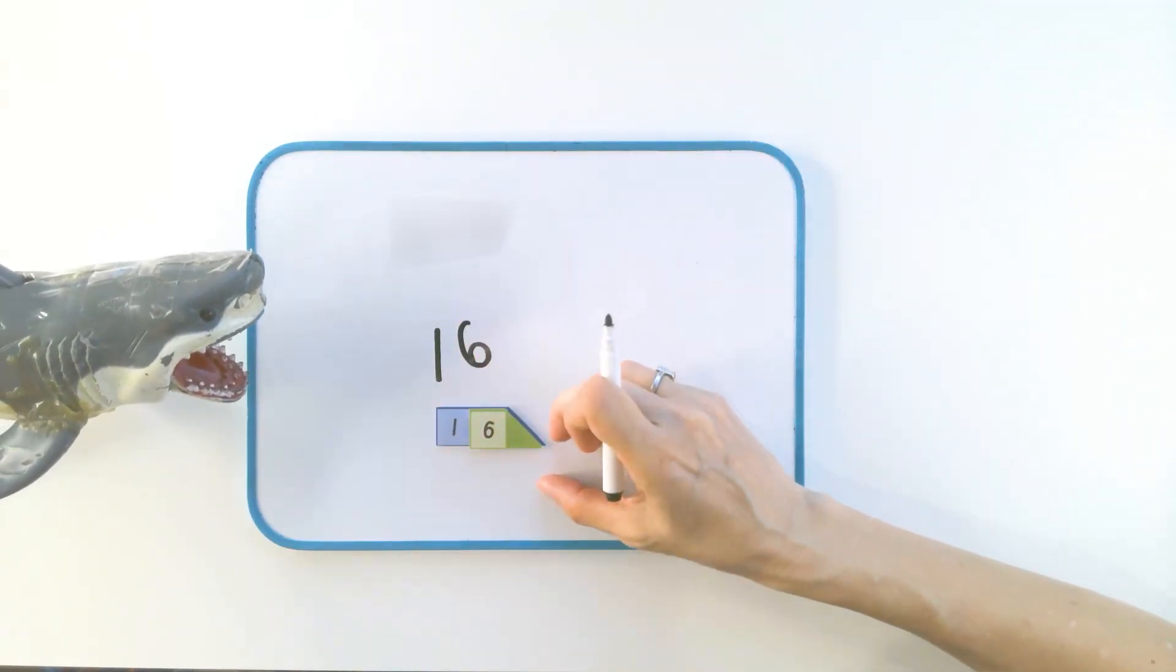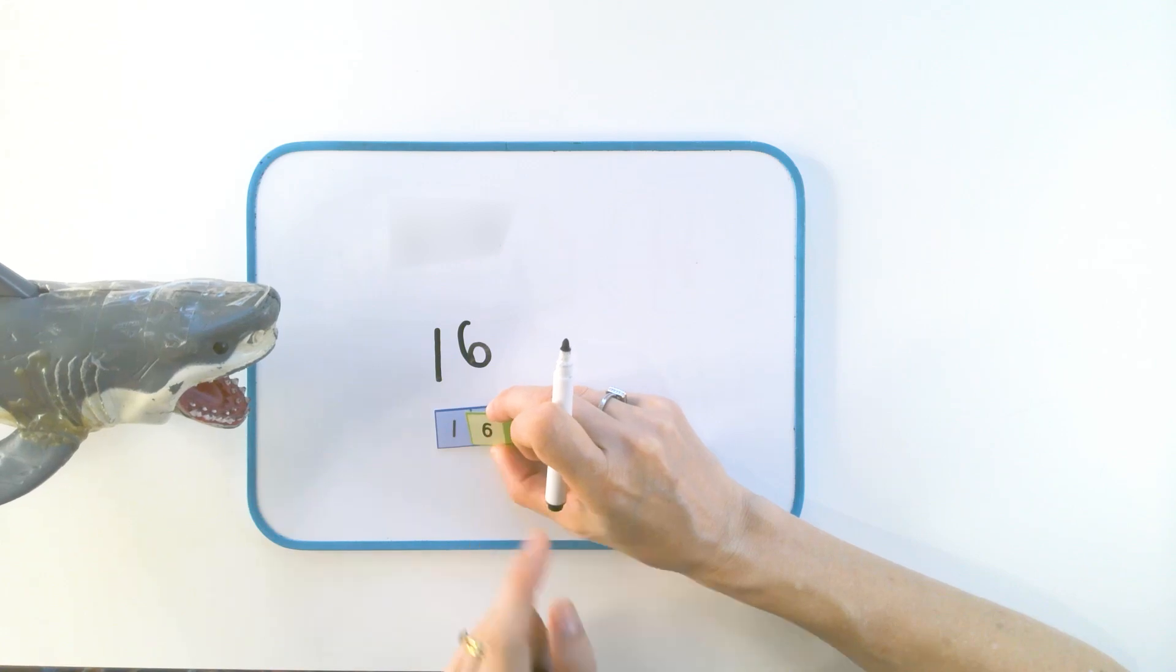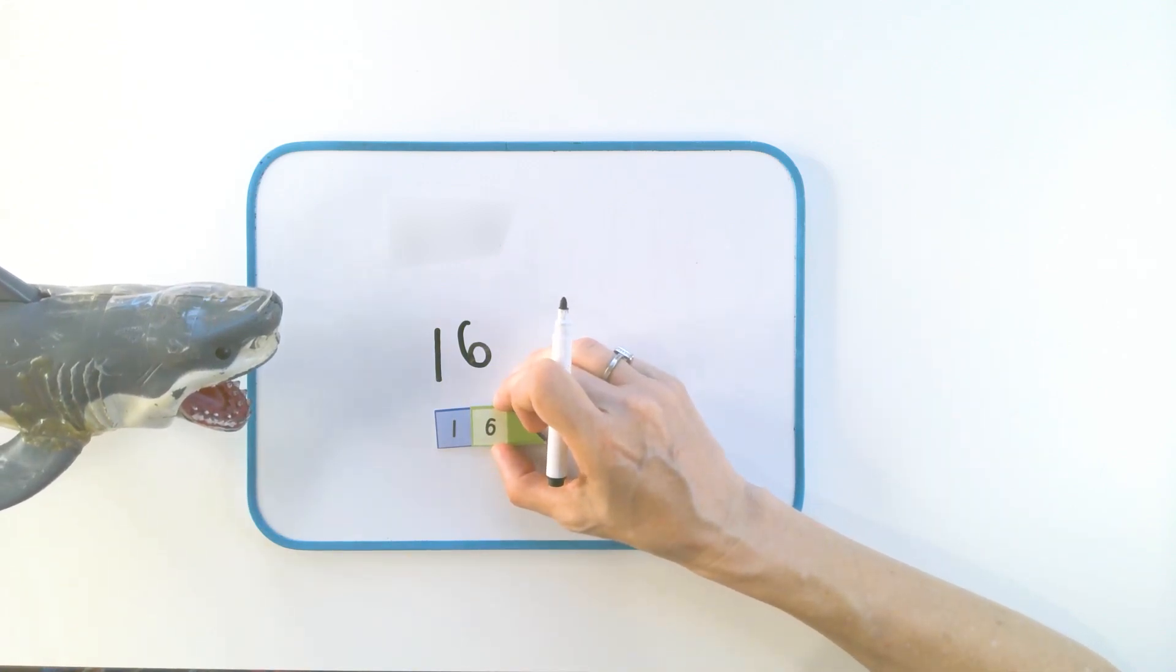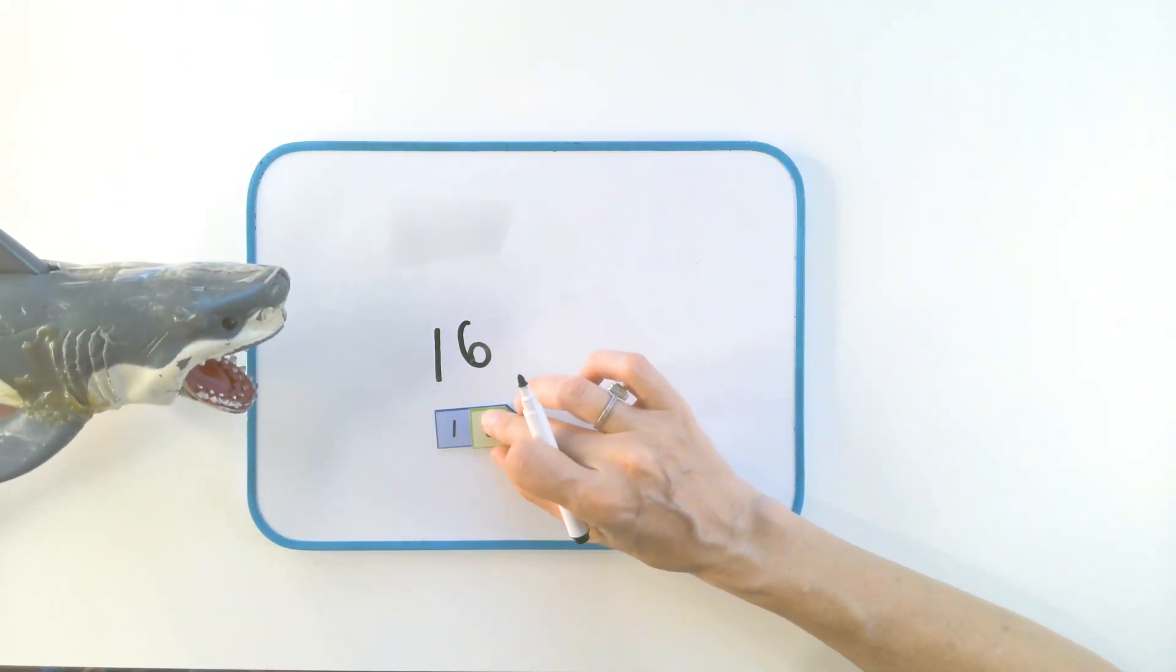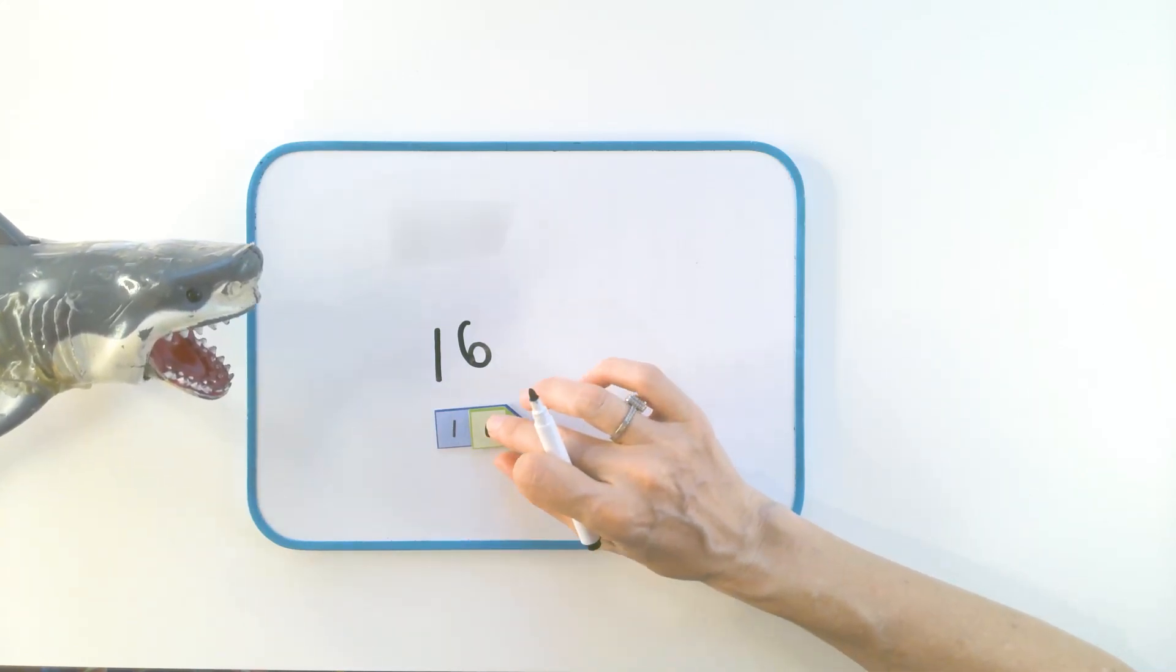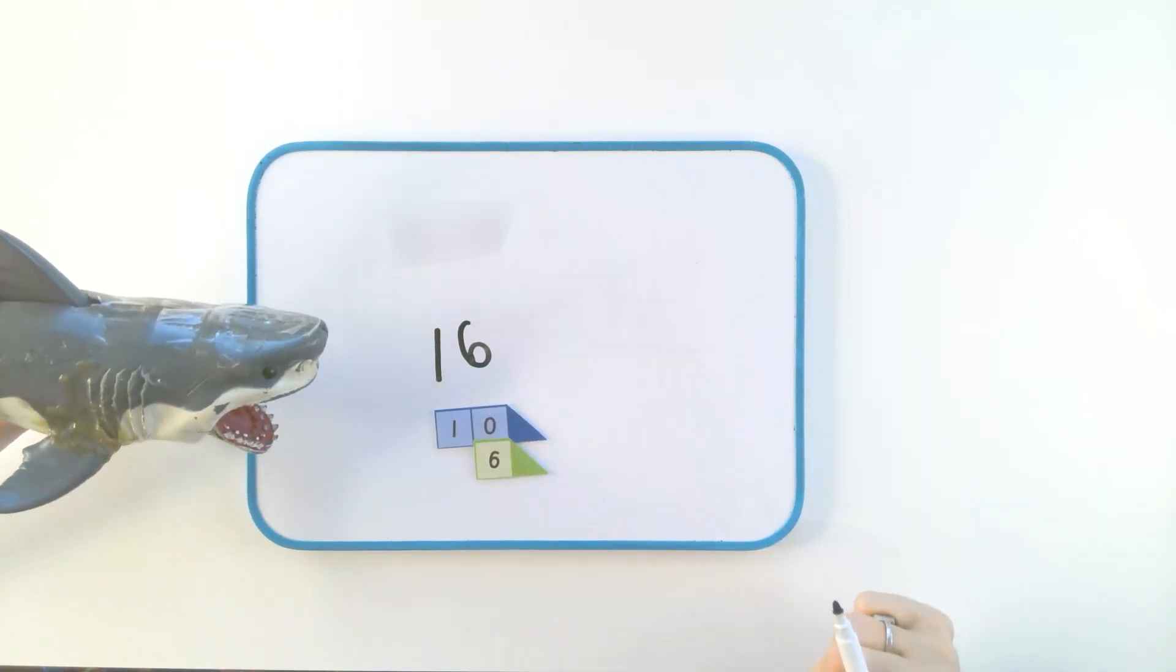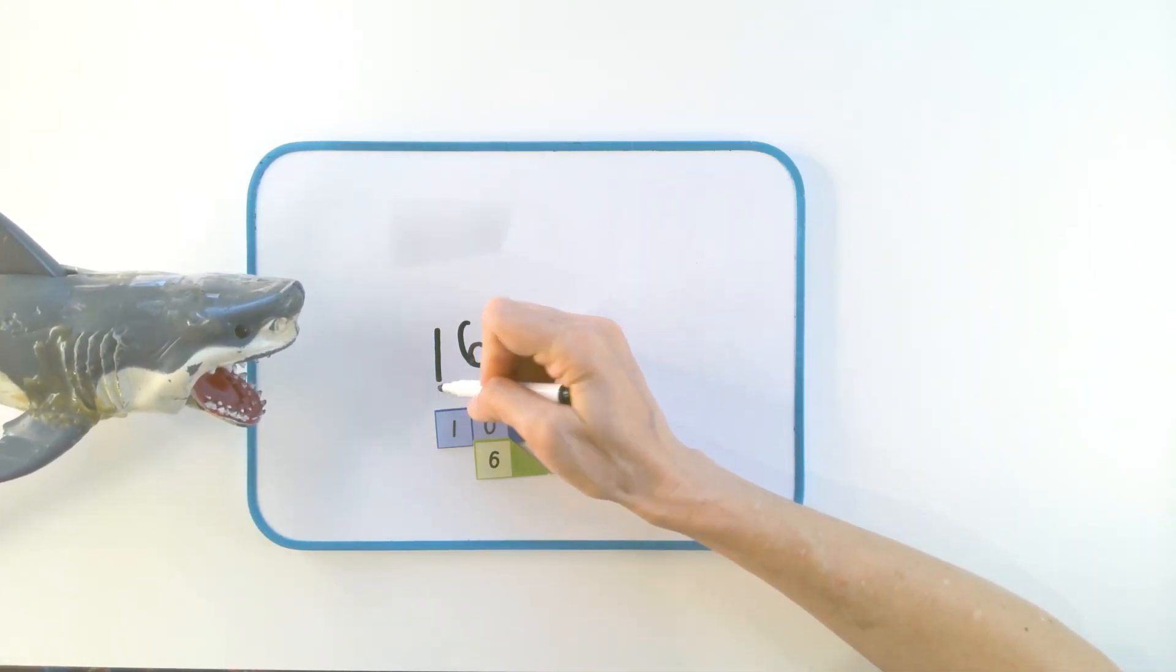This is the number 16. This ones digit, because it's only got one digit, is worth six, but there's something hiding underneath. This is not worth one, Barty. Are you ready for a surprise? It's not worth one. It's actually worth a lot more. Are you ready? Oh, surprise. This digit is worth ten.